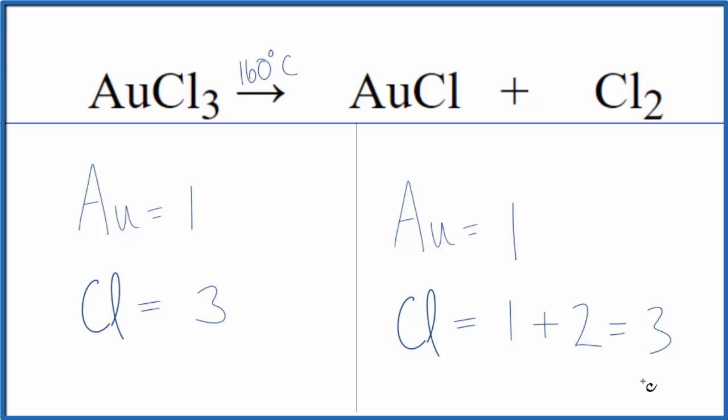And this equation is already balanced. If you're having trouble with this equation, it's probably that you counted this chlorine and then you forgot about these two. So make sure you count all of the chlorines up on the product side.